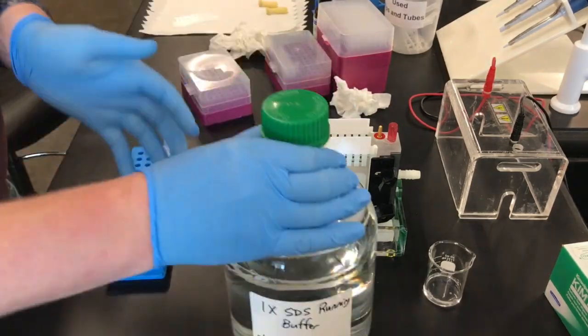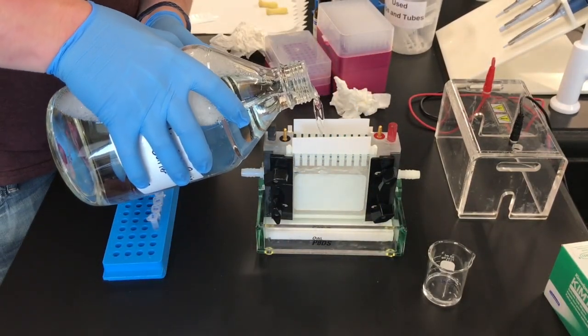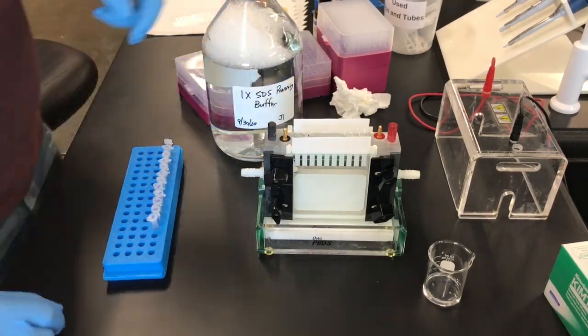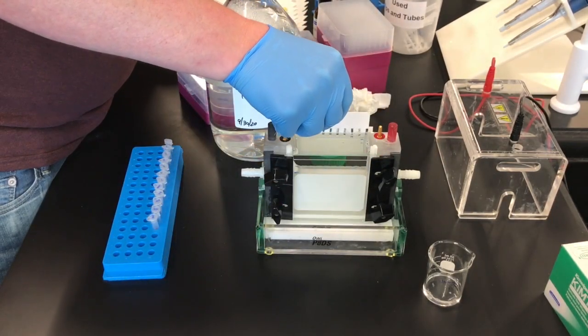To get ready to run the gel, take some 1X buffer and fill the middle chamber all the way up to the top. Then, you can take out the combs so that the buffer can go down into the wells.